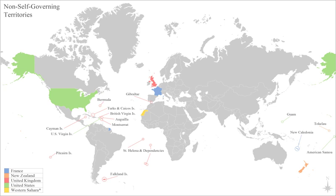The Special Committee on Decolonization maintains the United Nations list of non-self-governing territories, which identifies areas the United Nations believes are colonies. Given that dependent territories have varying degrees of autonomy and political power in the affairs of the controlling state, there is disagreement over the classification of 'colony.'